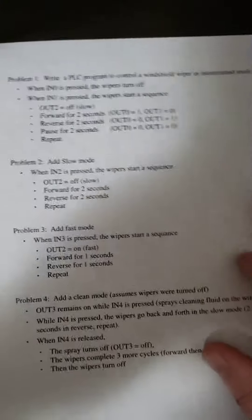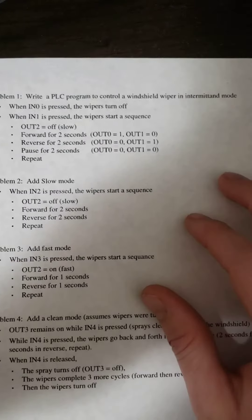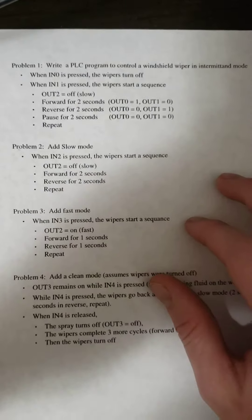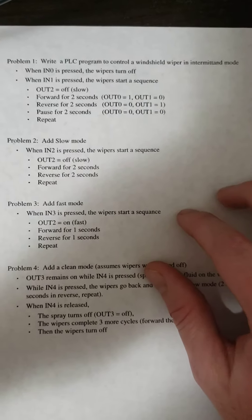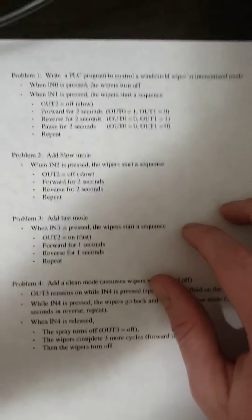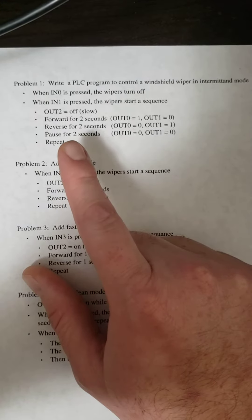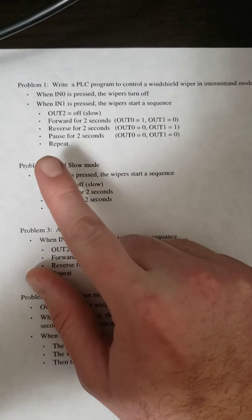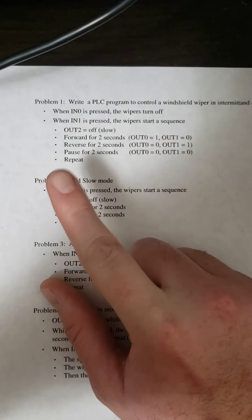For the first problem, when input 0 is pressed the wipers turn off. When input 1 is pressed, the wipers start a sequence for intermittent mode: forward 2 seconds, reverse 2 seconds, pause 2 seconds, and repeat.